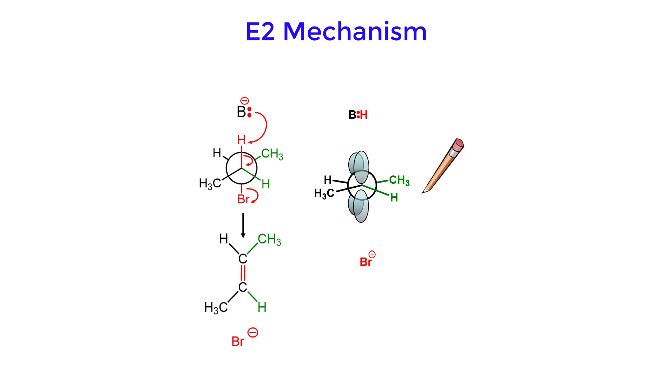The animation shows that for a pi bond to form, the dihedral angle between the hydrogen and bromine must be 180 degrees.